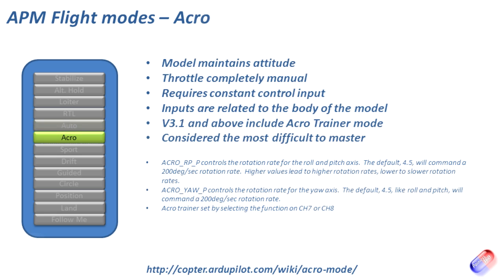Next is Acro mode. The model maintains its attitude — if you put the nose down 10 degrees it keeps that — with completely manual throttle, requiring constant control input. It's like the very first multi-copters with basic control, like balancing a golf ball on top of a beach ball: you're always managing throttle, pitch, roll, everything. You can set Acro Trainer mode on channel 7 or 8, but I wouldn't suggest going for this one straight away.